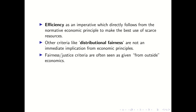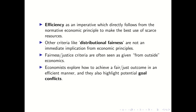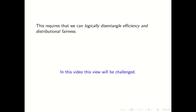Economists see economic efficiency as an imperative which directly follows from the normative economic principle of making the best use of scarce resources. On the other hand, criteria like distributional fairness or justice are not seen as an immediate implication of economic principles. Therefore, most economists view fairness or justice criteria as given from outside economics. Once these fairness criteria are given, economists explore how to achieve fair outcomes in an efficient manner, and they highlight potential goal conflicts between efficiency and distributional fairness. However, this requires that we can logically disentangle efficiency and distributional fairness — and in this video, this view will be challenged.